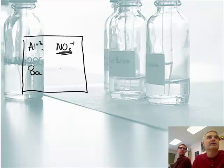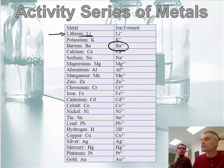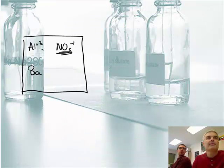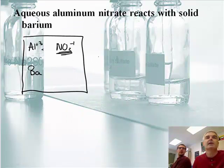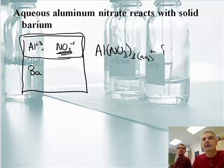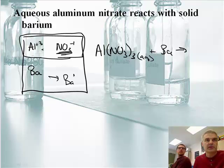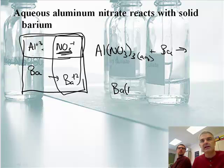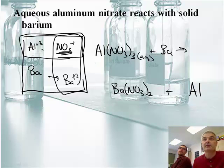Looking at the activity series chart: barium is higher than aluminum, so barium is going to get the girl. Barium doesn't have her now, so this reaction works. I write Al(NO₃)₃ aqueous plus Ba solid. Barium makes a plus-two ion when it reacts. So I put barium with nitrate: that makes Ba(NO₃)₂. And then aluminum gets kicked out — just aluminum metal, losing the charge. That's aqueous for Ba(NO₃)₂ and solid for aluminum.